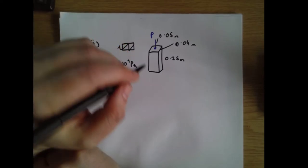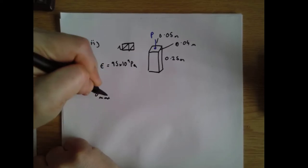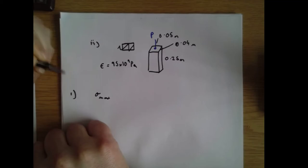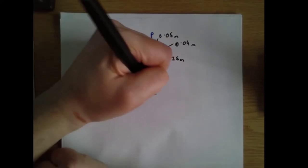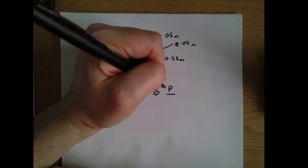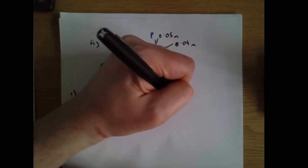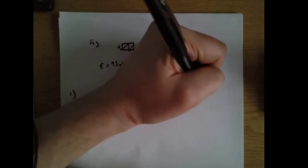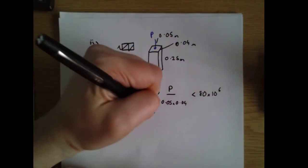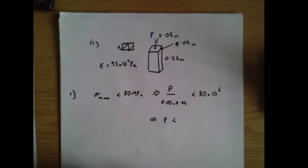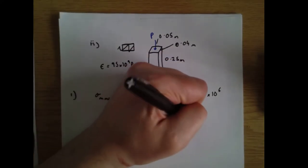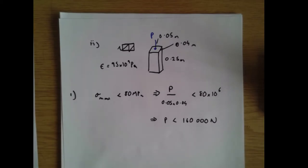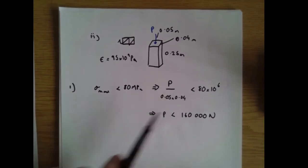We need the largest load that can be applied given two conditions. Condition one: maximum stress must be less than 80 megapascals. So P divided by the cross-sectional area (0.05 times 0.04) must be less than 80 times 10 to the 6. Multiplying both sides gives P must be less than 160,000 newtons.